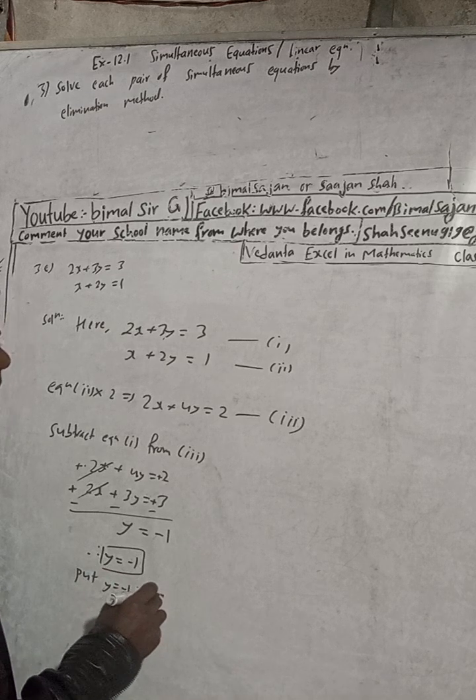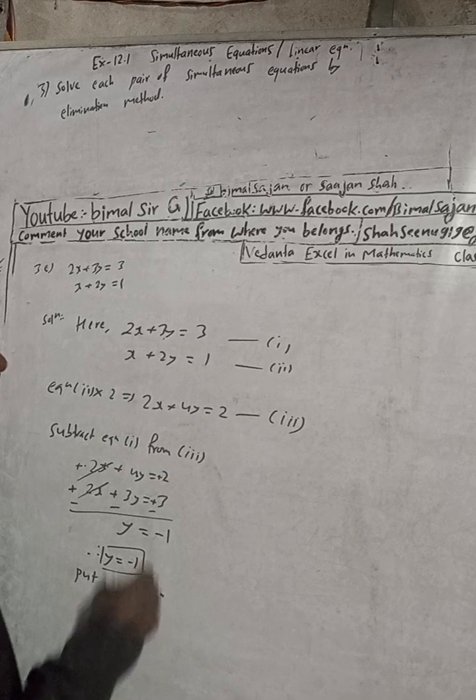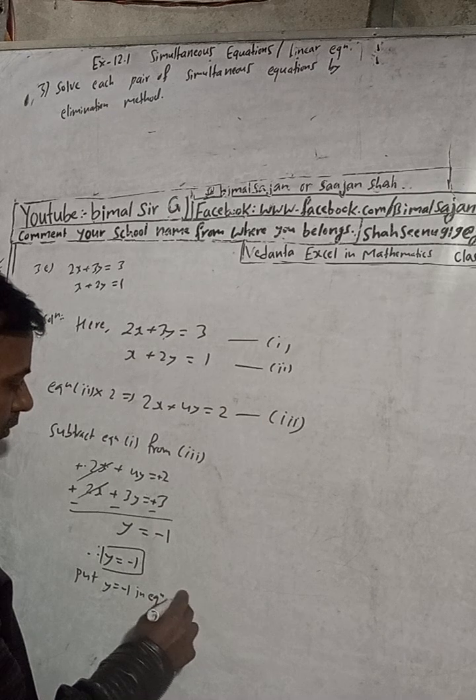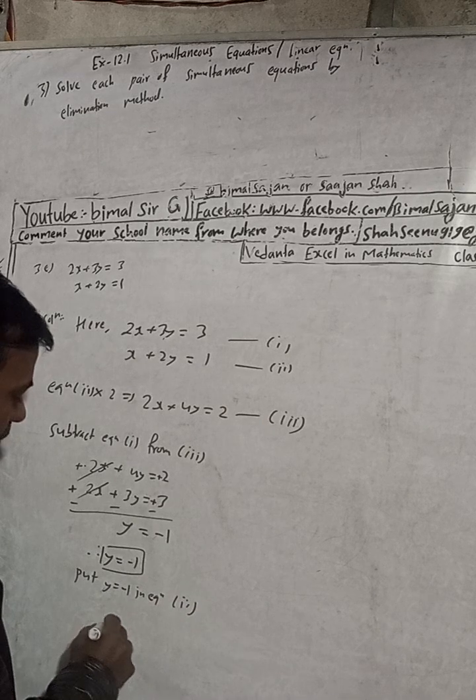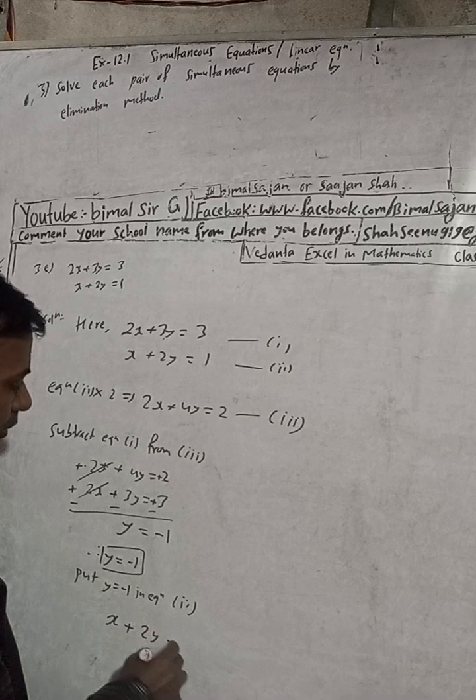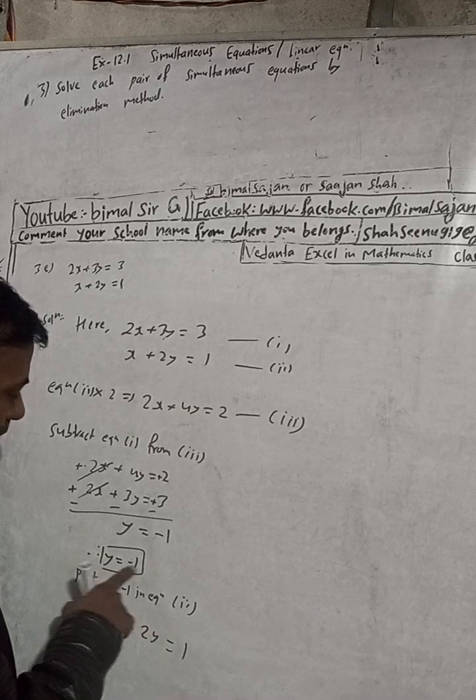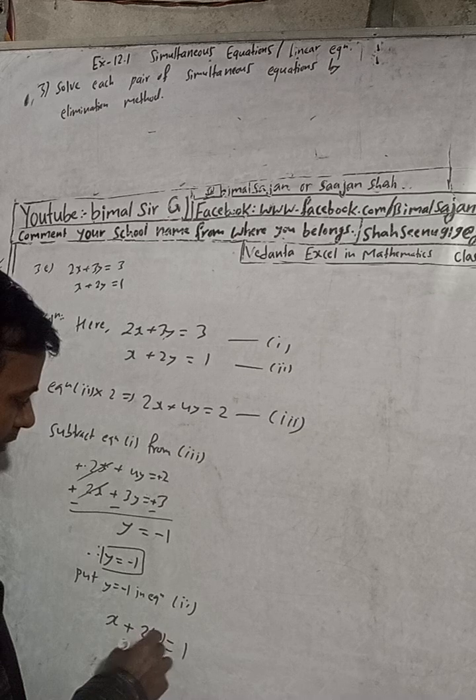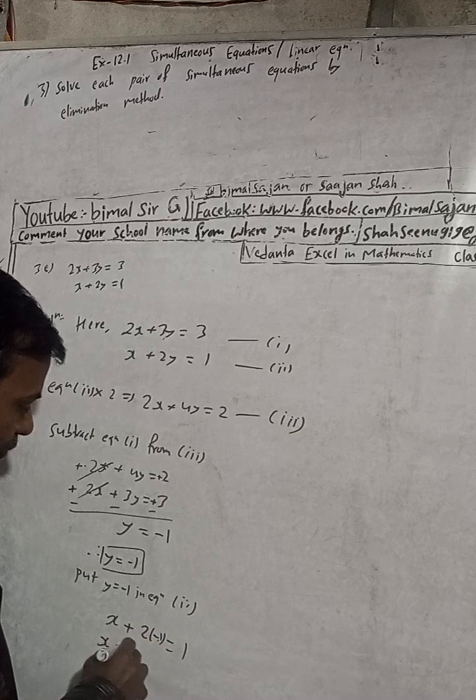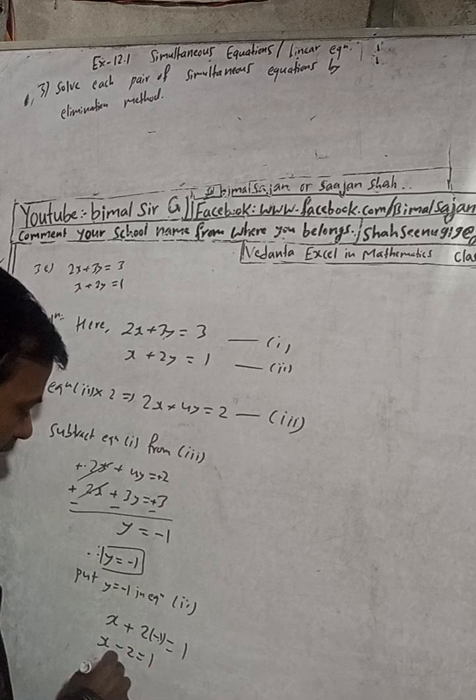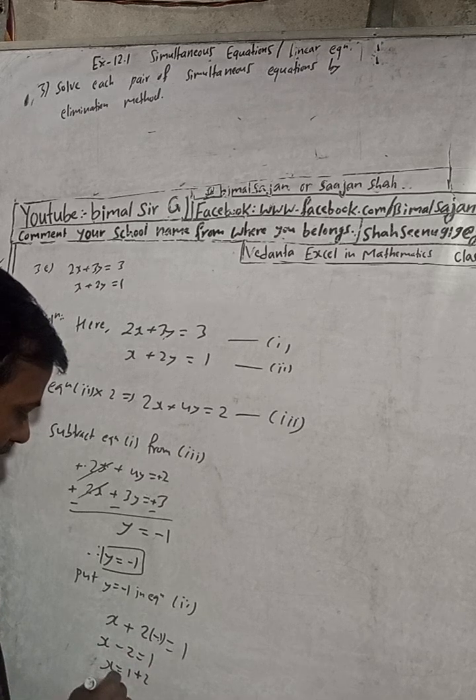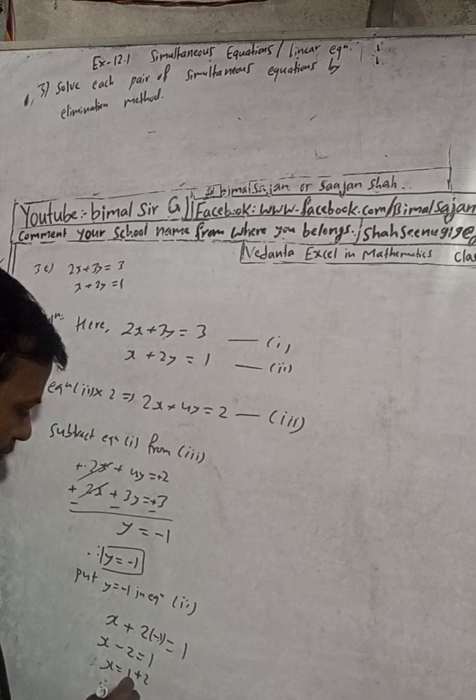Any one you can put, but which is easier one? This is easier than this. So I'll put it now. The equation is x plus 2y is equal to 1. So in place of y, we have to put minus 1. So here, x plus 2 into minus 1 is equal to 1. Now x minus 2 is equal to 1, so x is equal to 1 plus 2, therefore x is equal to 3.